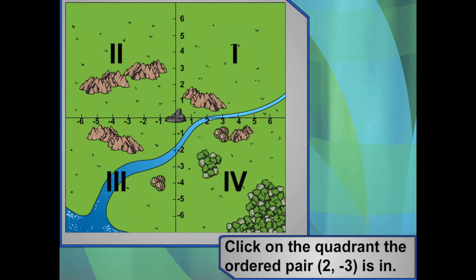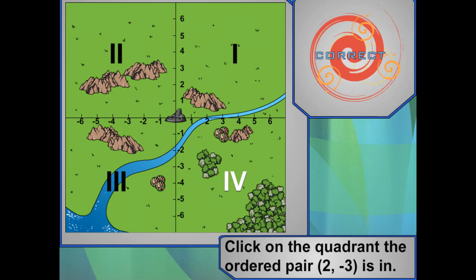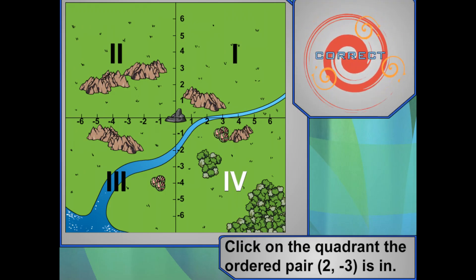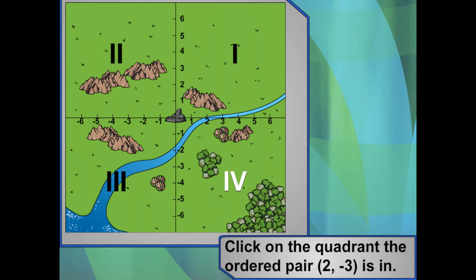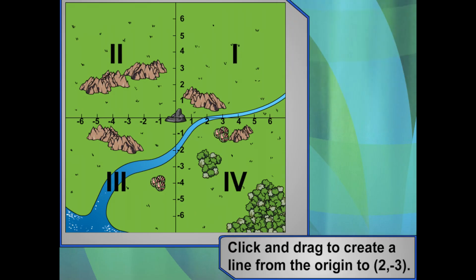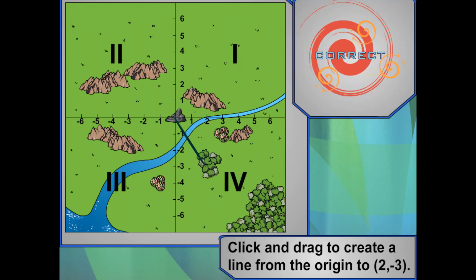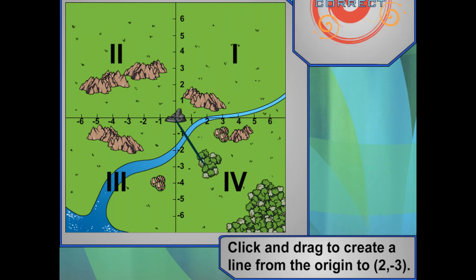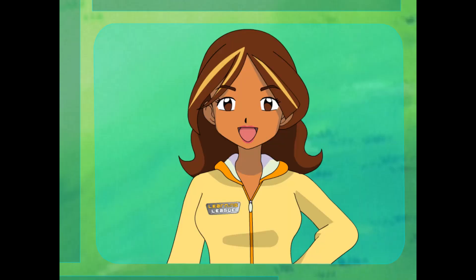Now, in which quadrant would you find the ordered pair 2, negative 3? Click on the correct quadrant on the grid. That's right! The ordered pair 2, negative 3 is found in quadrant 4. You did it — over 2 and down negative 3. Good job! And good luck!